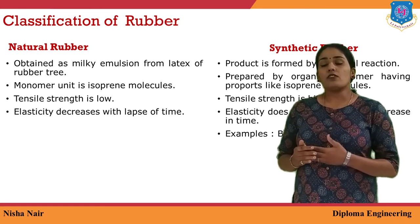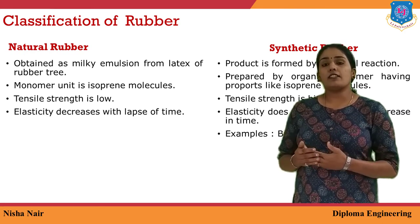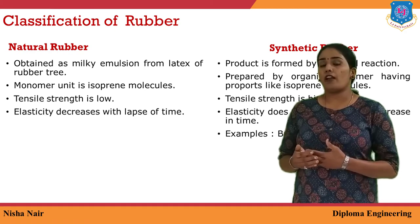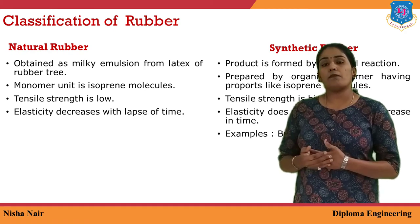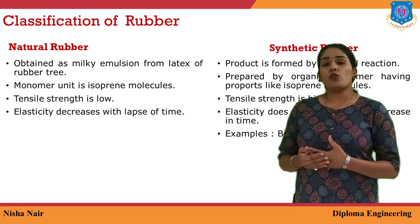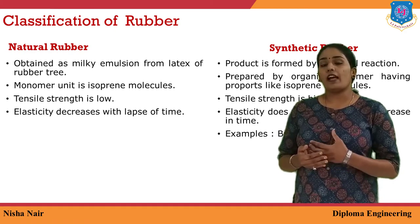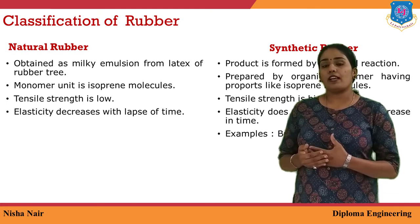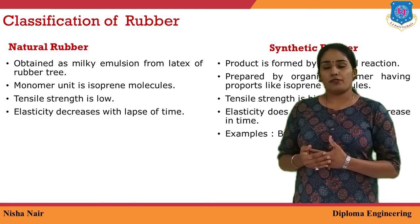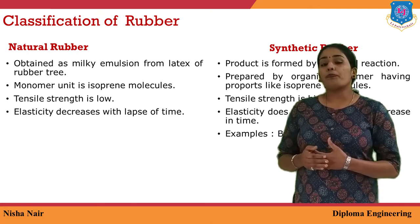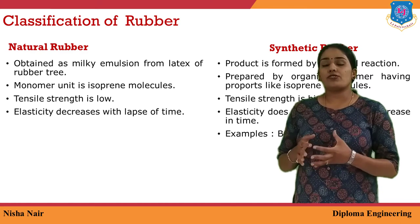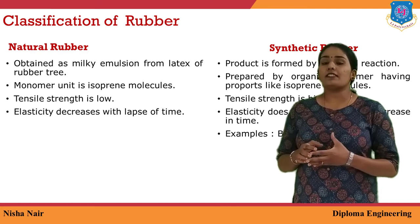In natural rubber, the monomer unit is the isoprene molecule. For synthetic rubber, similar monomer units like isoprene are prepared in the laboratory. In natural rubber, the strength is less compared to synthetic rubber.